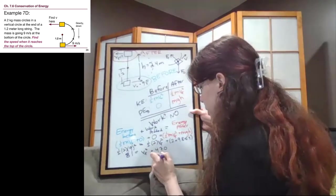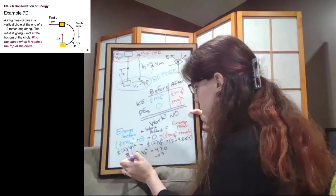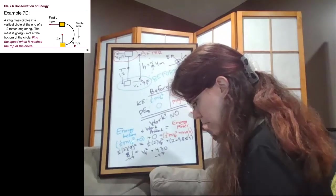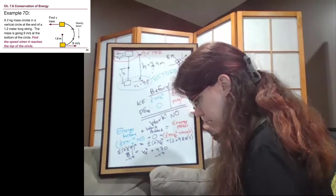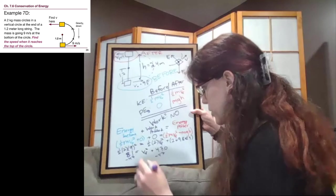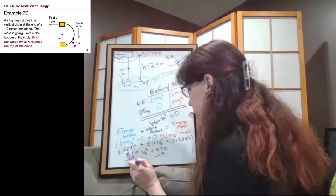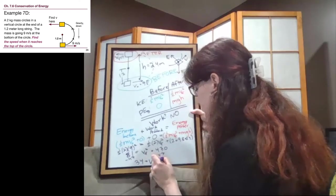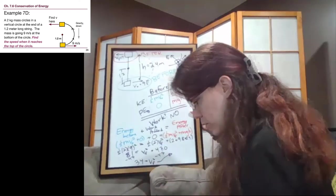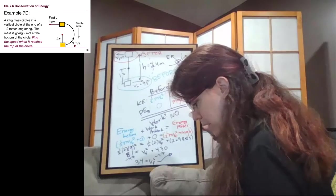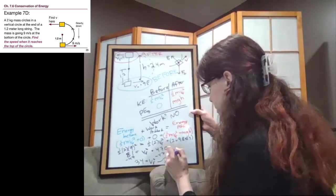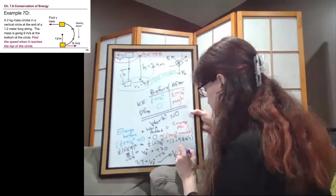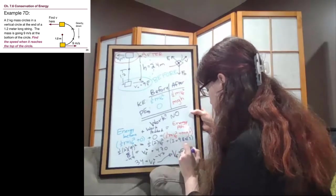So we'll subtract 47 from both sides. So 81 minus 47 is 34. So we have 34 is equal to v final squared. What that means is we have to take the square root of both sides. So the square root of 34, v final is the square root of 34, which is 5.8 meters per second.